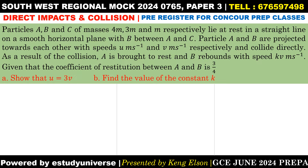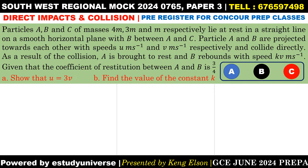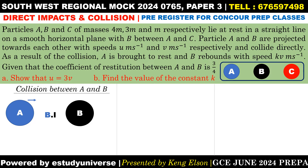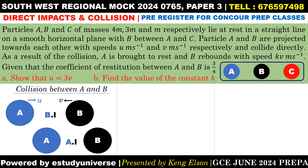Since B is between A and C, we can draw their positions accordingly. For the first part, we focus on the collision between A and B. Before impact: A moves towards B with speed u, and B moves towards A with speed v. After impact: A is brought to rest, so its final velocity is zero. B rebounds, meaning its direction changes, and it has a final velocity of kv.